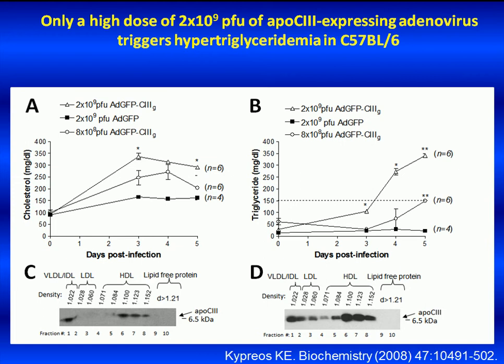ELISA analysis of plasma samples isolated on day 5 post-infection showed that steady-state human plasma ApoC3 levels were in the range of 50 to 80 mg per deciliter in C57 black 6 mice infected with 2×10⁹ PFU of the ApoC3-expression adenovirus, and approximately 15 to 25 mg per deciliter in C57 black 6 mice infected with the lower dose of 8×10⁸ PFU. ApoC3 was mainly found in HDL and, to a lesser extent, in VLDL and IDL.